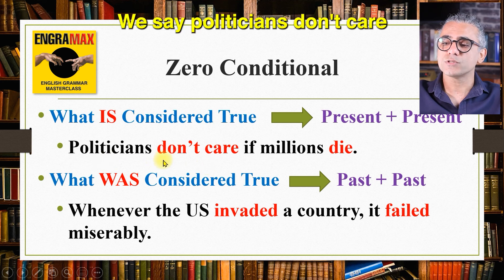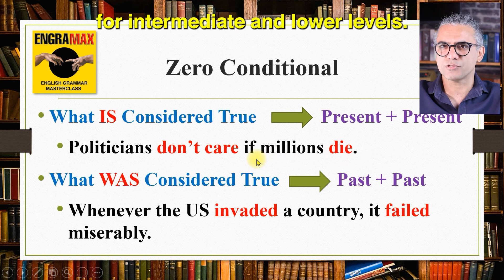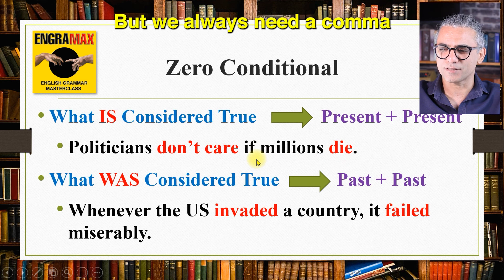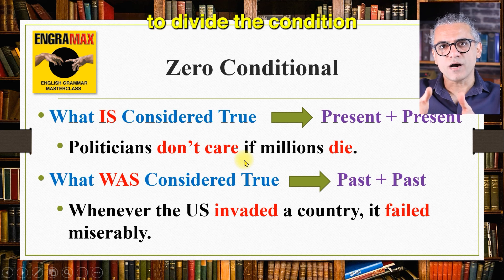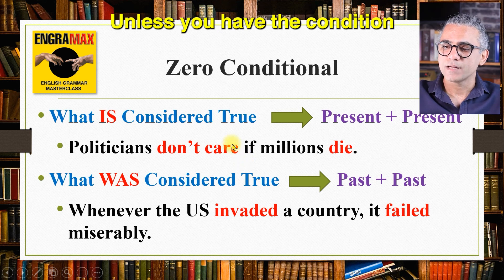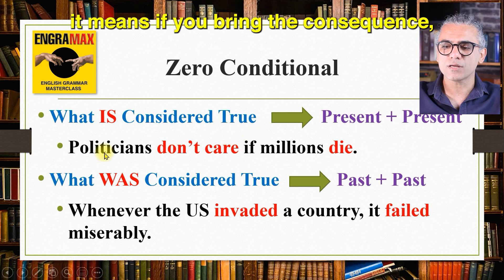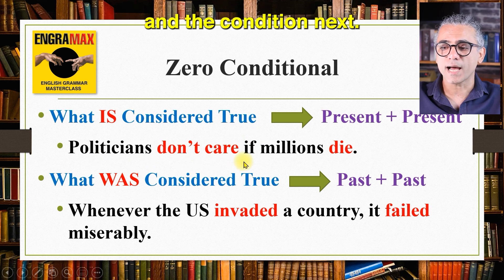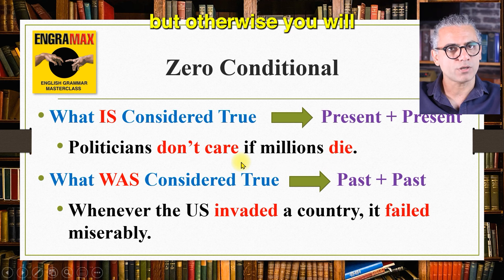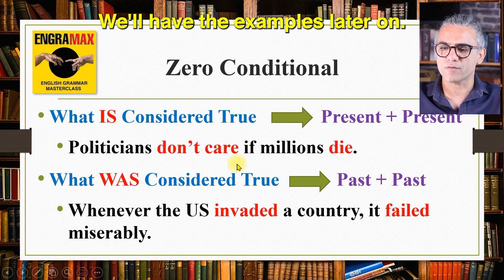For example, we say: politicians don't care if millions die. Remember, this is actually for intermediate and lower levels, but we always need a comma to divide the condition from the consequence — unless you have the condition word in the middle. If you bring the consequence first and the condition next, you don't need a comma, but otherwise you will definitely need a comma to separate them.